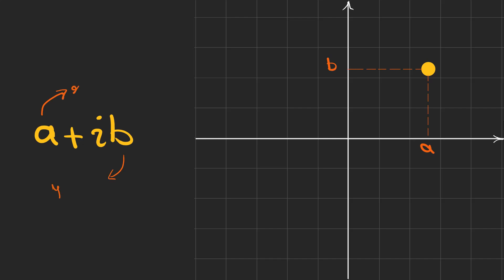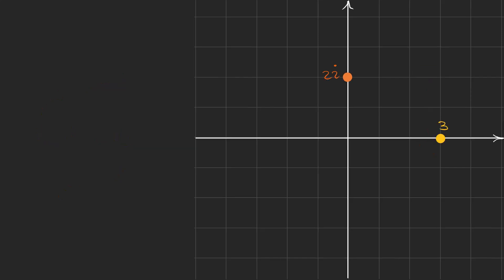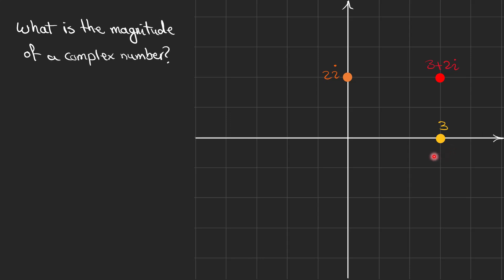We can easily show a complex number on a 2D plane in which the real part is shown on the x-axis and the imaginary part B is shown on the y-axis. For example, this point is 3 — it's a real number — and this point is 2i, which is an imaginary number. This red point shows a complex number which is 3 plus 2i. So I have a question: what is the magnitude of a complex number?